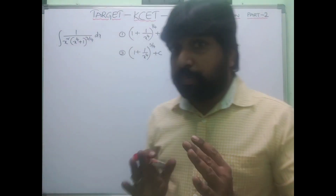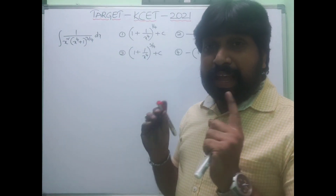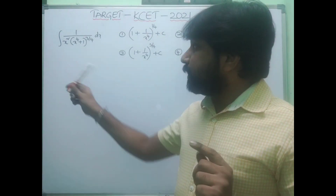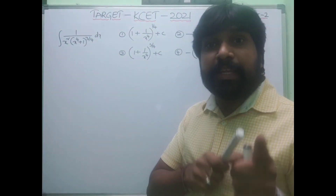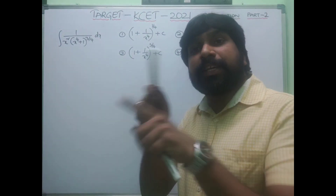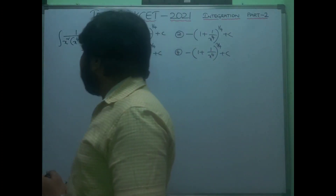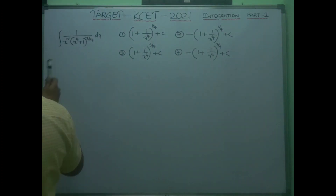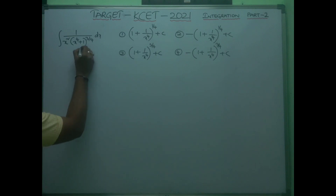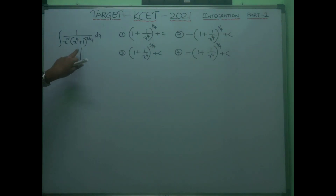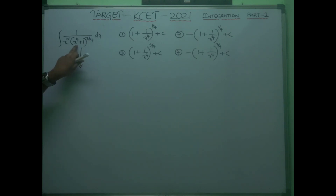The next model is most important — it is from the NCERT textbook and NCERT miscellaneous exercise: integral of 1 / [x²·(x⁴+1)^(3/4)] dx. The logic is to take x⁴ as common inside the bracket.